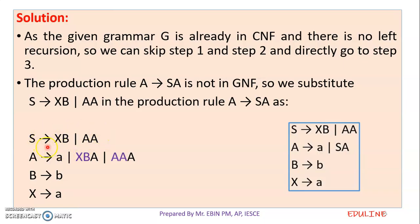Now we have to consider S tends to XB and S tends to AA. This is not all Greibach Normal Form. In Greibach Normal Form, S tends to a non-terminal, then the second is a non-terminal condition. This is the CNF — Chomsky Normal Form — and Greibach Normal Form.